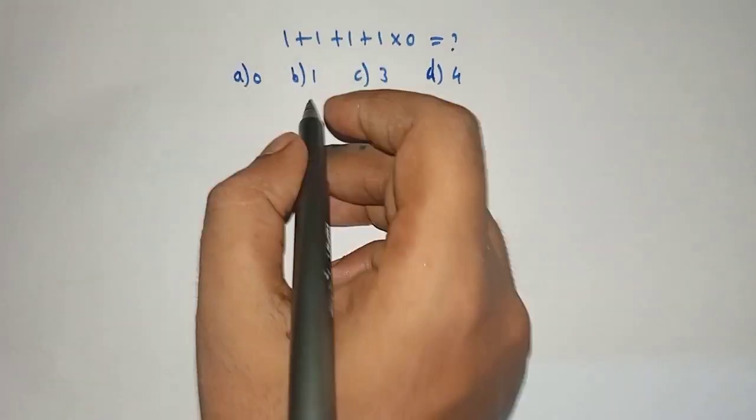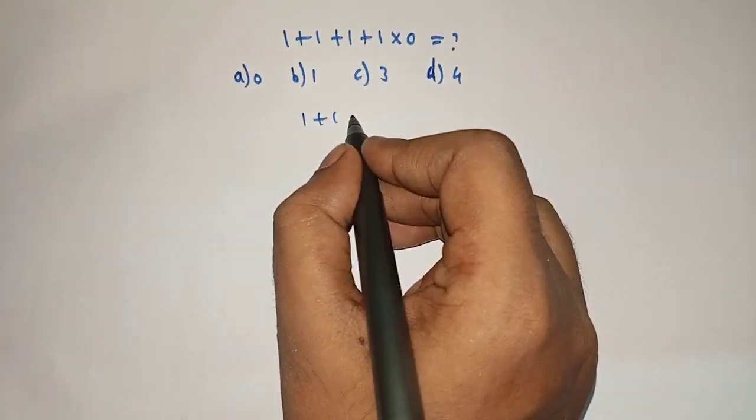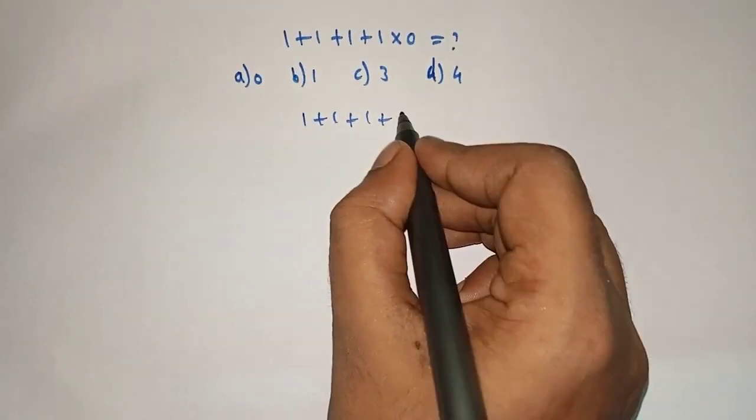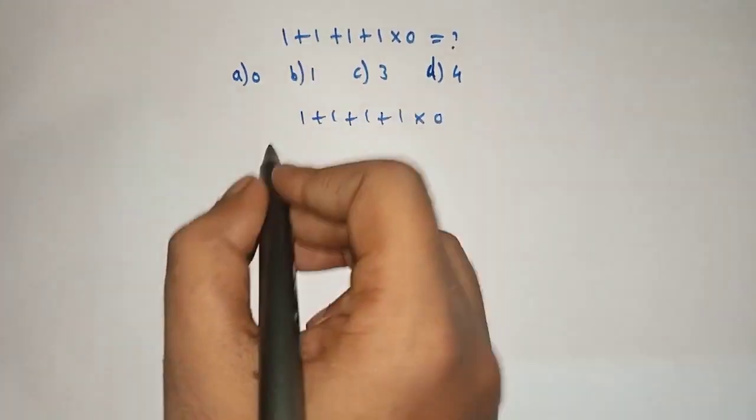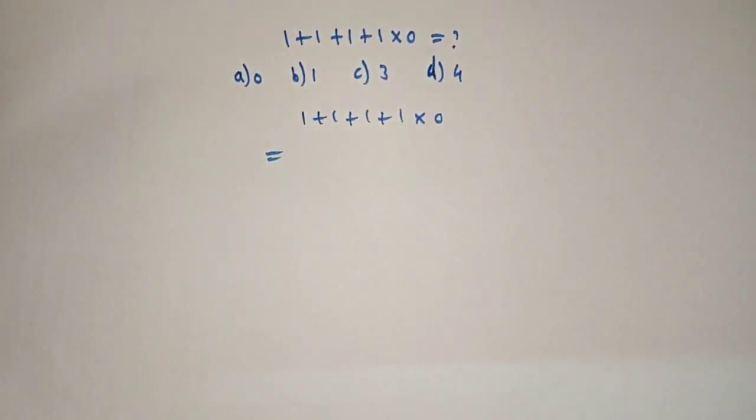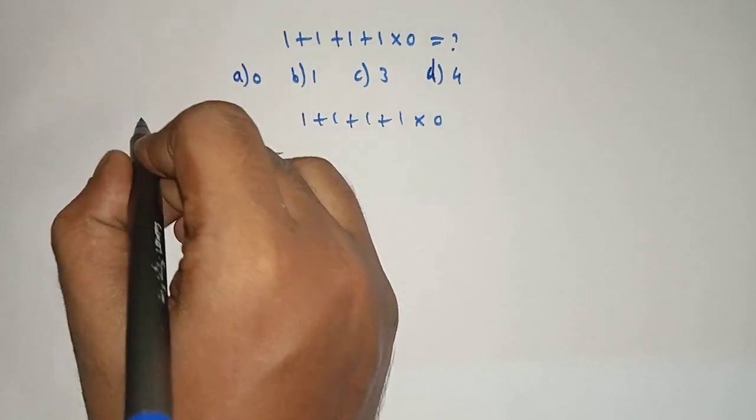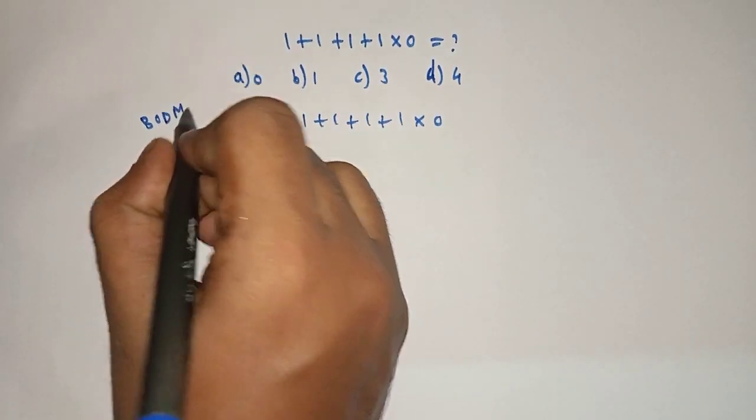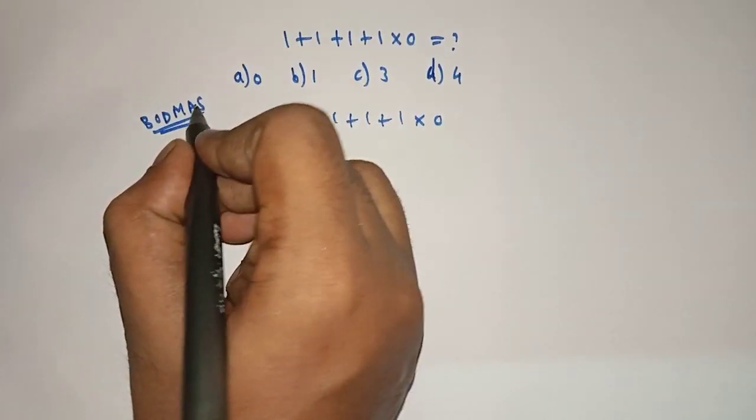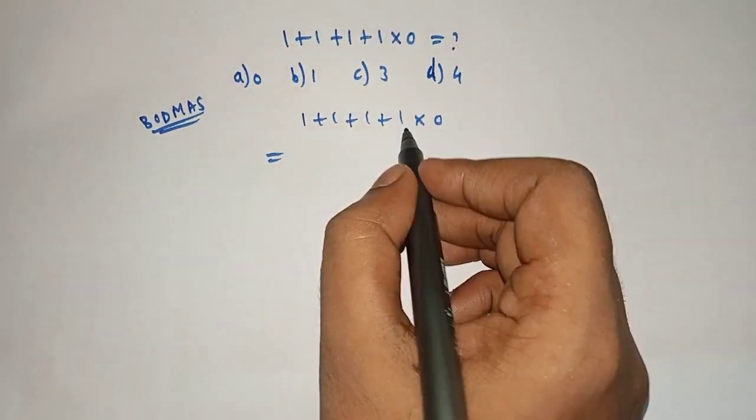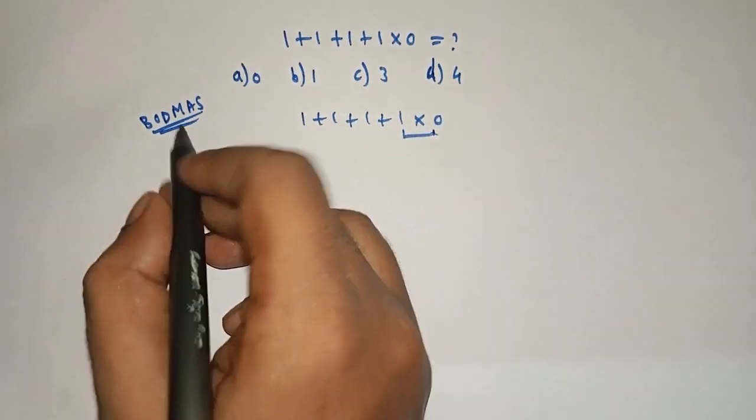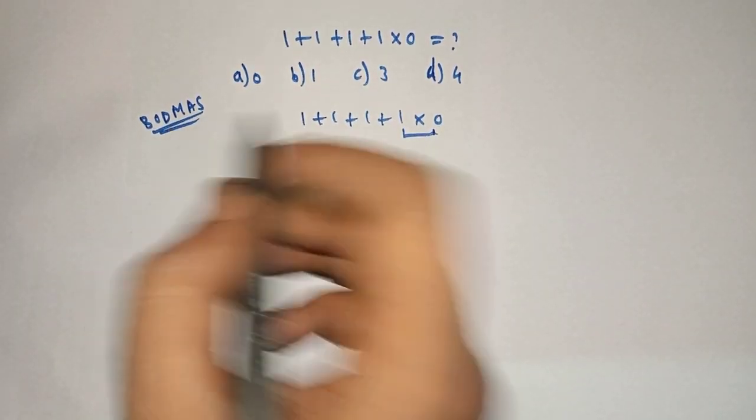So, let's solve 1 plus 1 plus 1 plus 1 into 0 is equal to. Here, by using BODMAS rule, first we will solve this term because multiplication comes first.